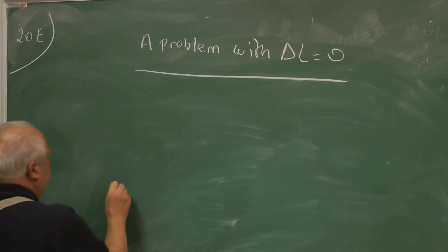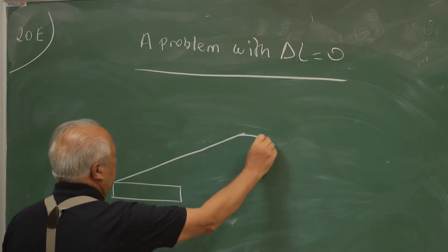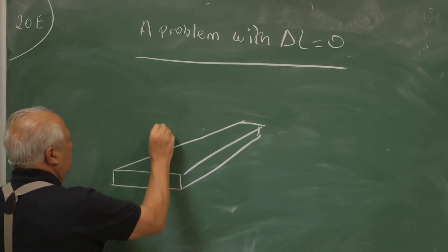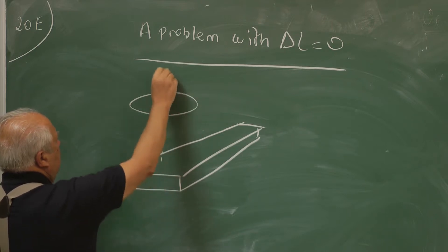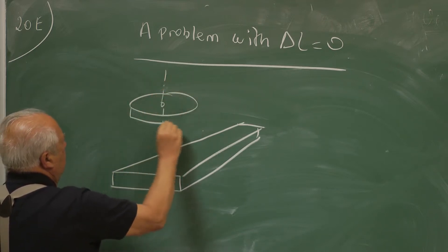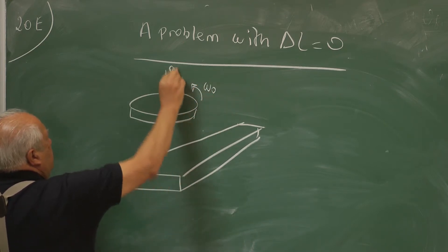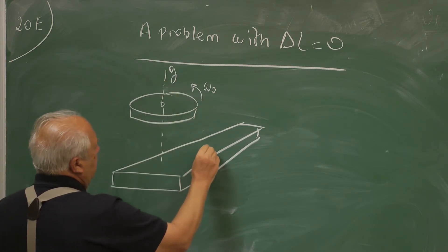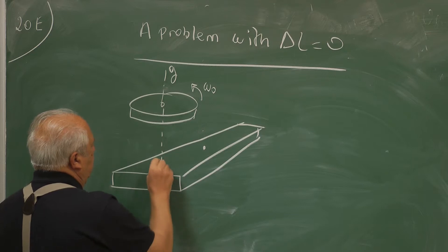Initially we have a plank and here is a disk. This is rotating with omega 0 about this axis g. And this is the central mass of the plank. And this distance is d.